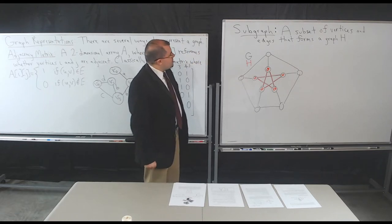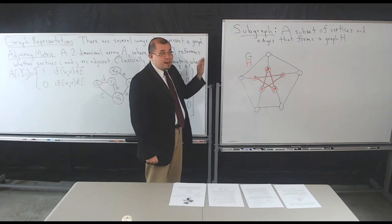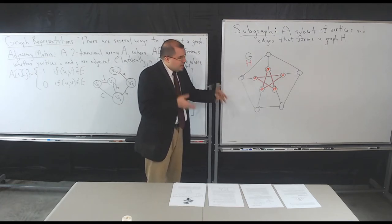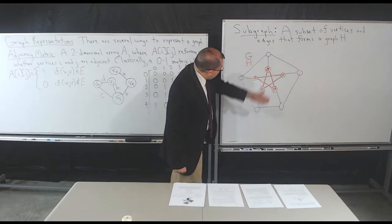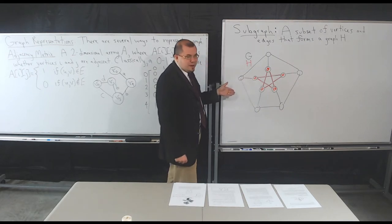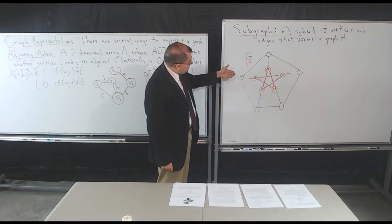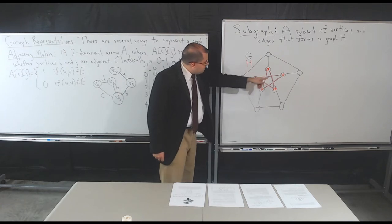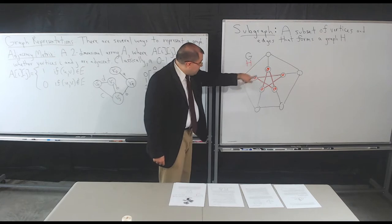I want to talk about what a subgraph is. A subgraph is just a subset of the vertices and edges such that it forms another graph, H. I have this overall graph here that I've outlined in black — this is called a Petersen graph, by the way, it's just an interesting graph. A subgraph of G would be H here: these five vertices and the edges connected between them.